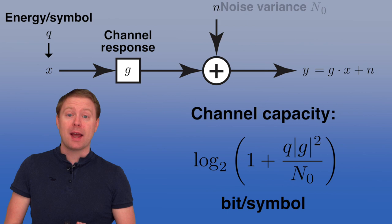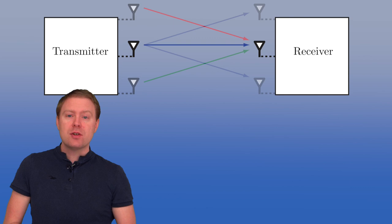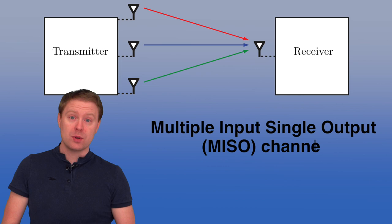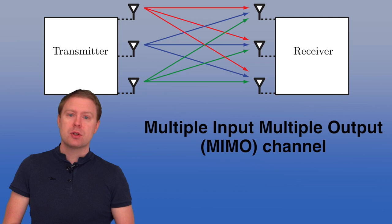We will now generalize this to some other cases. The first thing we will consider is a single input, multiple output, or SIMO channel, where we have one transmit antenna and multiple receive antennas. Another scenario is when we have multiple transmit antennas and one receive antenna — this is called a multiple input, single output, or MISO channel. There is also the case of multiple inputs and multiple outputs, called a MIMO channel, which we will look at in another video.